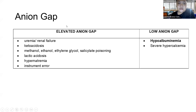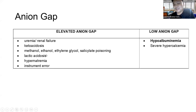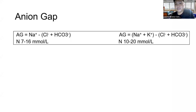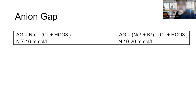The anion gap is useful for indicating an increase in unmeasured anions in the serum, and also as QC for the analyzer measuring electrolytes. Low anion gap is caused by hypoalbuminemia and severe hypercalcemia. Elevated anion gap is caused by uremia or renal failure, ketoacidosis, methanol, etc. Please memorize the formula for the anion gap. First formula: sodium minus (chloride plus bicarbonate). Second formula: (sodium plus potassium) minus (chloride plus bicarbonate). The electrolyte that can be omitted is potassium.